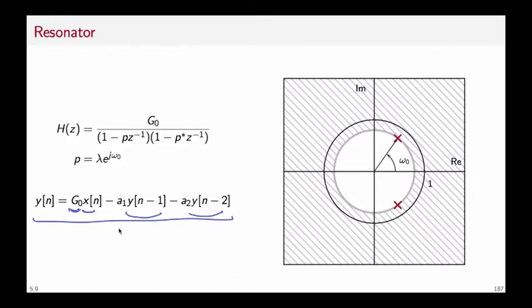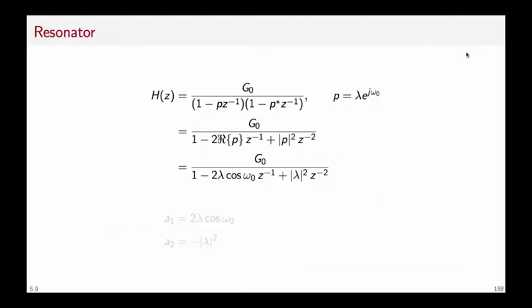The coefficients a1 and a2 we can determine if we work out the product of these first order terms. We start in factor form and then we can work out the product to obtain this canonical form in which we can find the coefficients that we will have to use in the CCDE. So a1 is 2 times lambda cosine of omega zero whereas a2 is minus magnitude of lambda square.